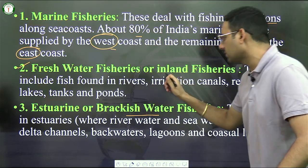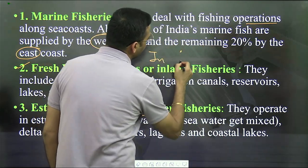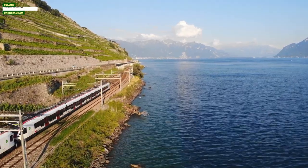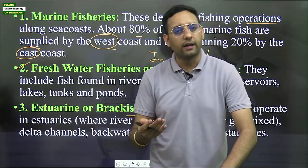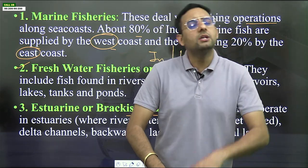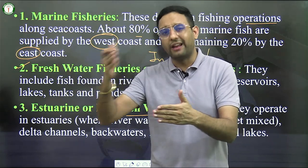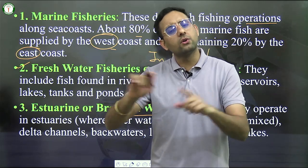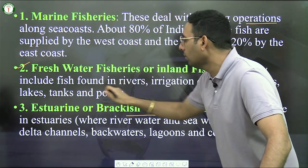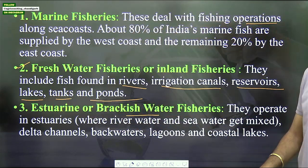The second type is freshwater fisheries, also known as inland fisheries. Inland means water resources present within the land — such as lakes, ponds, and canals. Ocean is not part of inland because it lies outside the solid land boundary. Freshwater or inland fisheries include fishes found in rivers, irrigation canals, reservoirs, lakes, tanks, and ponds.